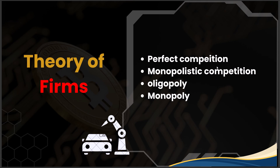Monopolistic competition involves many producers using product differentiation to distinguish themselves from others. For example, taxi companies like Ola and Uber are both taxi services but have differentiation among them. Consumer awareness of this differentiation is essential, and barriers to entry or exit are typically lower compared to oligopolistic markets.